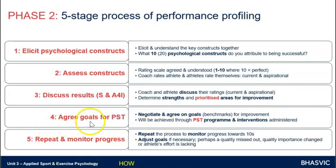Stage four is to agree the goals for psychological skills training. We've identified strengths and weaknesses — these are the things we need to work on. Let's set some realistic SMART goals to move us forward from this point. So if your score was 3 out of 10 and we know we want to be up at a 7 or an 8, what are the goals going to be to get us there? How can we take these bite-sized steps to improve psychology in this particular aspect? You would agree the goals and set a programme to work through over weeks to achieve those goals.